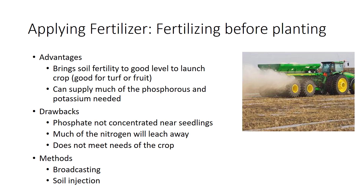The simplest and most economical way to fertilize before planting is by broadcasting. Machinery and sometimes aircraft is used to spread dry fertilizers evenly on the soil's surface. Fluid fertilizers can also be sprayed on the soil. For phosphate and potash, the material should then be plowed down or mixed into the soil before the crop is planted. Soil injection, also known as knifing or chiseling, can also be used before crops are planted—most commonly, anhydrous ammonia is chiseled into the whole field.